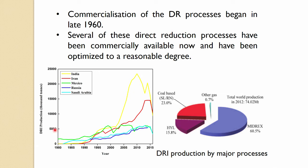From the latest figures, India is the leading country in the production of DRI, measured in thousands of tons. India started a little late while countries like Mexico, Russia, and Saudi Arabia started quite early, but their production over the last two to three decades has remained more or less constant.